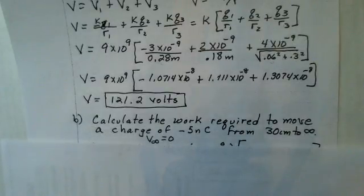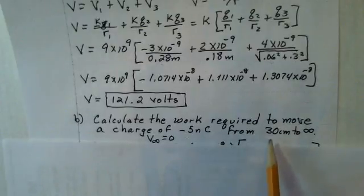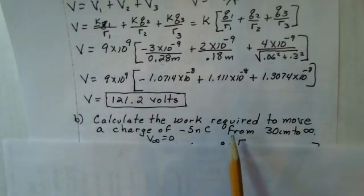Now, how much work would be required to move a charge of minus five nanocoulombs from the 30 centimeter location out to infinity? Well, we know the work is q times delta V, the change of potential.